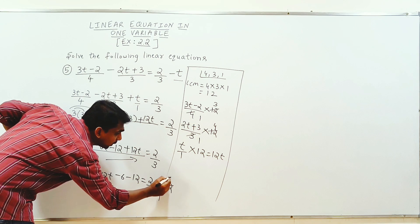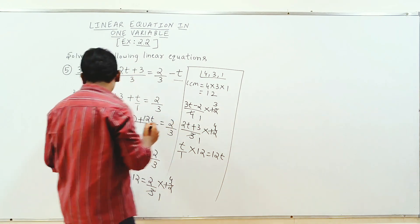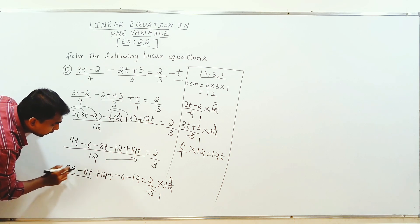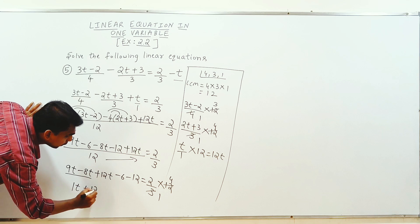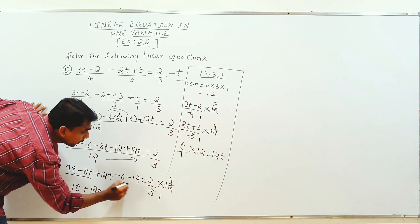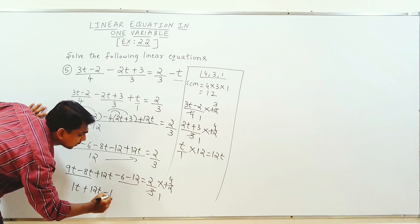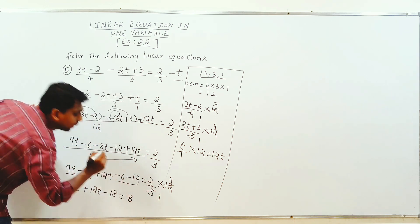Multiply minus into plus is minus, 4, 3 is 12. Plus 12t is equal to 2 by 3. We can cancel 3, 1, 3, 4. So solve: 9t minus 8t plus 12t, add minus 8 and add 12 plus 6, 18 is equal to 4, 2, 8, 8.